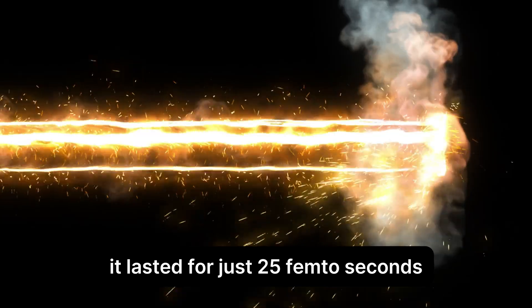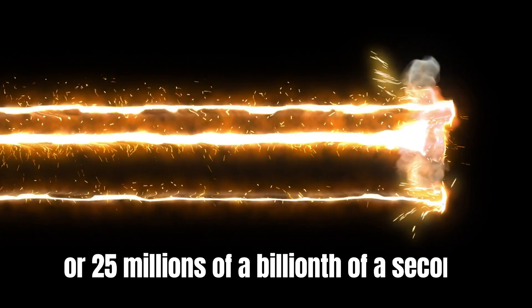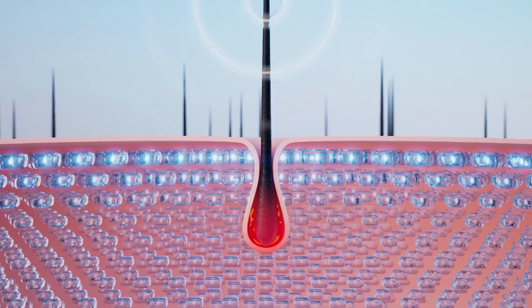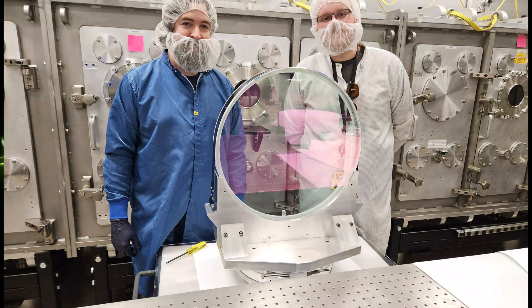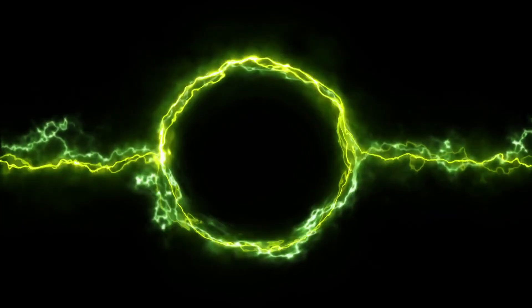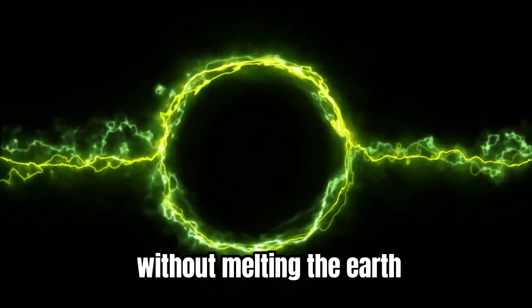But there's a twist. This power didn't last for a second. It lasted for just 25 femtoseconds, or 25 millionths of a billionth of a second. That's shorter than the time it takes light to travel the width of a human hair. So how can a lab at the University of Michigan produce that much power without melting the Earth?